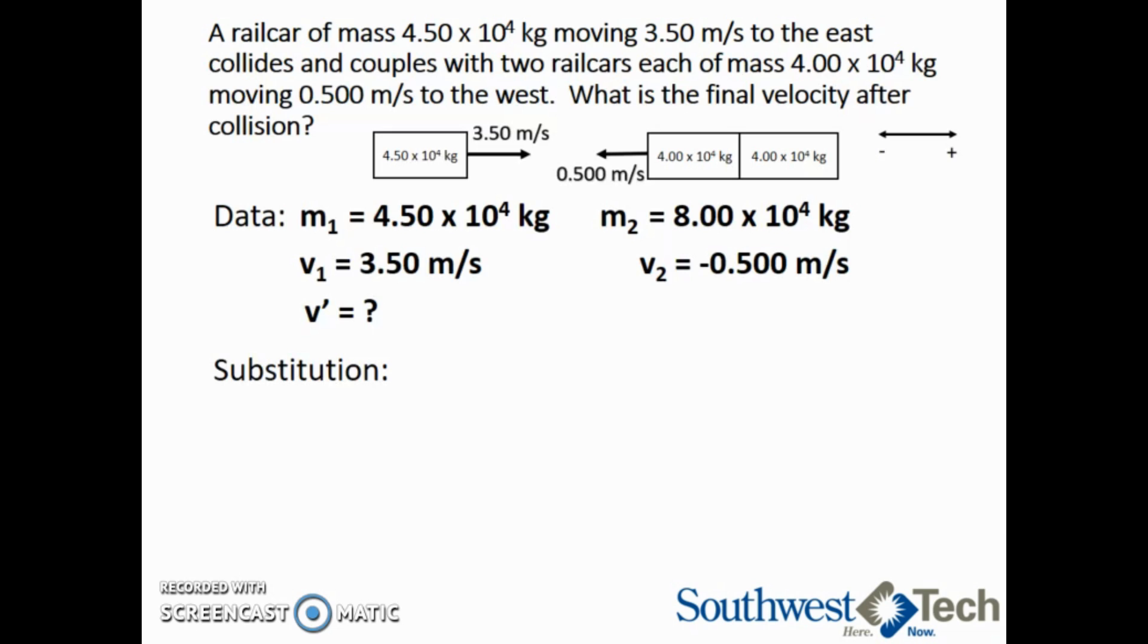We can substitute in all of the data we are given and we have 4.5 times 10 to the 4 kilograms multiplied by 3.5 meters per second plus 8 times 10 to the 4 kilograms multiplied by negative 0.5 meters per second divided by 4.5 times 10 to the 4 kilograms plus 8 times 10 to the 4 kilograms.